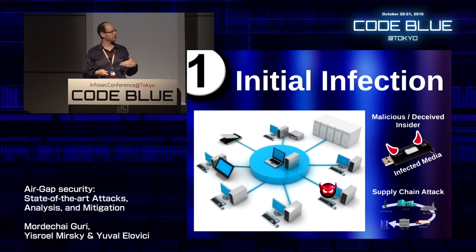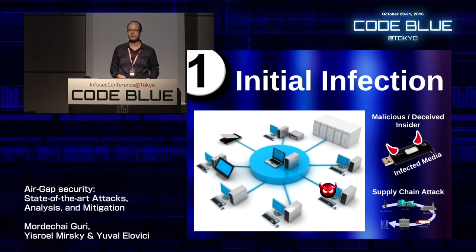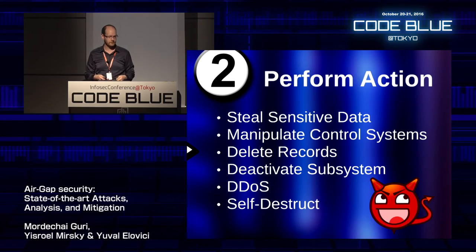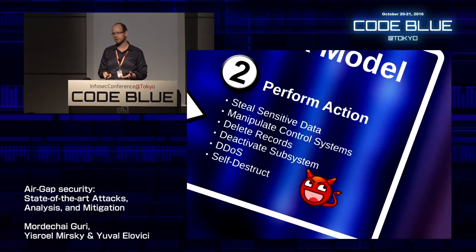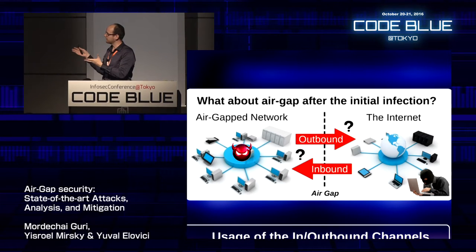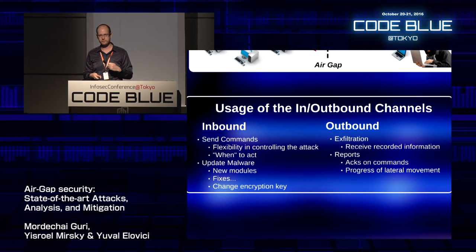Another option is a supply chain attack, where hardware — perhaps a USB keyboard — is infected at the factory when made, then brought into the isolated network and plugged in. After the isolated network is infected, the second step is for the attacker to have the malware perform some activity: stealing sensitive data, manipulating control systems, deleting records, and so on. The real question is how the attacker can communicate with the malware once it's in the network, and how information can be extracted because of the air gap.